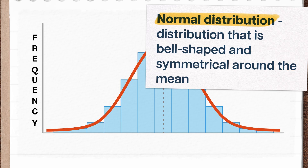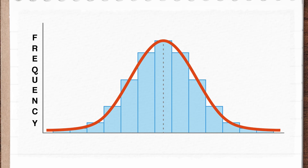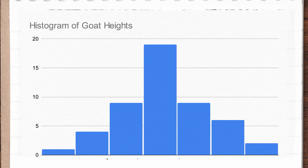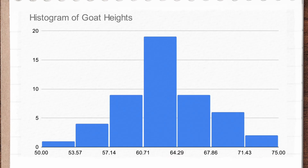In a normal distribution, data tend to cluster in the center and become less and less common the further out you go. It's symmetrical, with the mean, median, and mode all located at the same dead center point, and it's probably the most common distribution model you'll see.